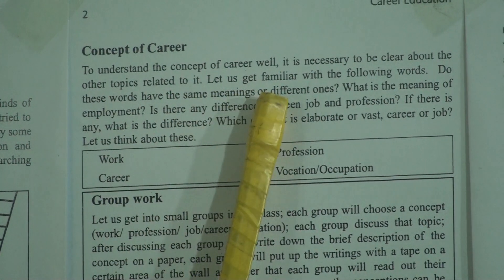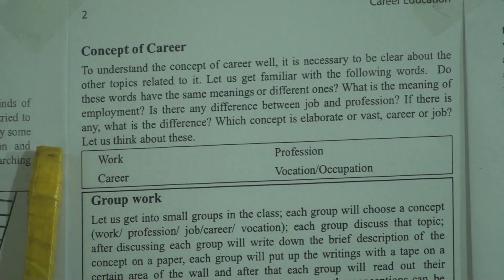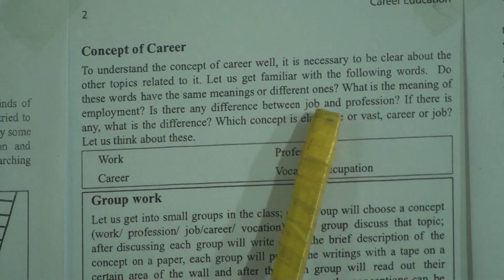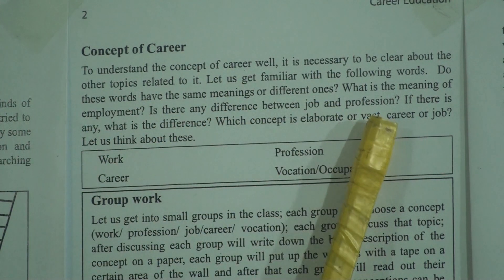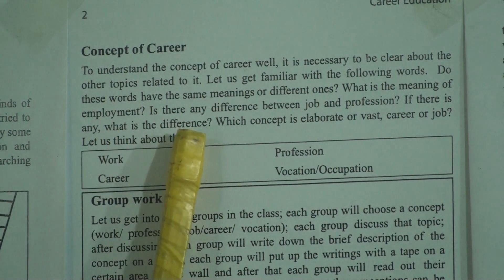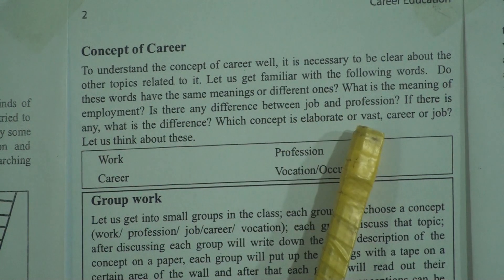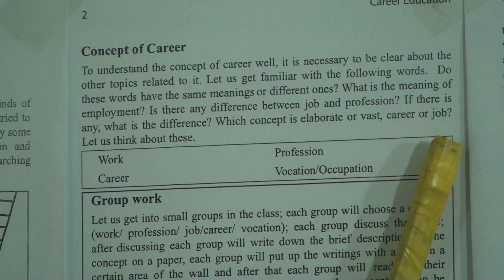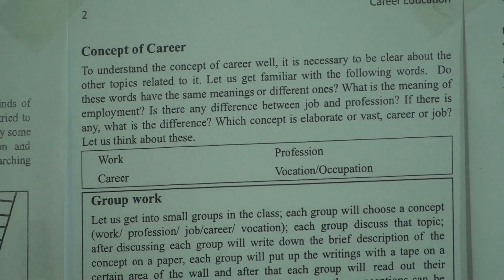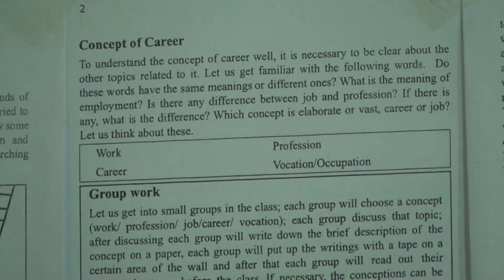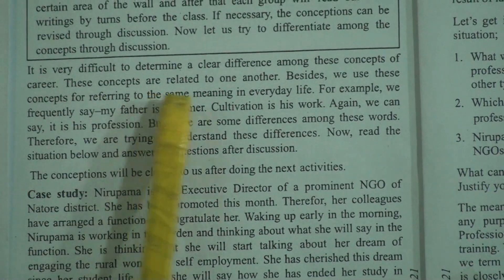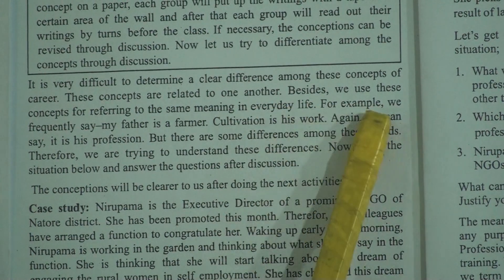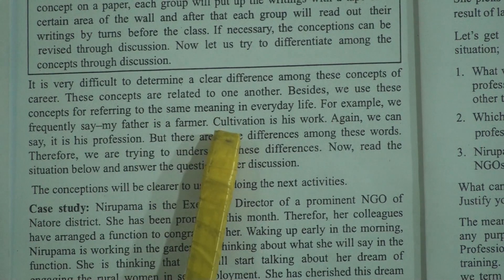Let us get familiar with the following words. Do these words have the same meanings or different ones? What is the meaning of employment? Is there any difference between job and profession? Which conception is elaborate or vast — career or group? Now see, it is very difficult to determine a clear difference among these concepts of career. These concepts are related to one another, and we use these concepts for referring to the same meaning in everyday life.